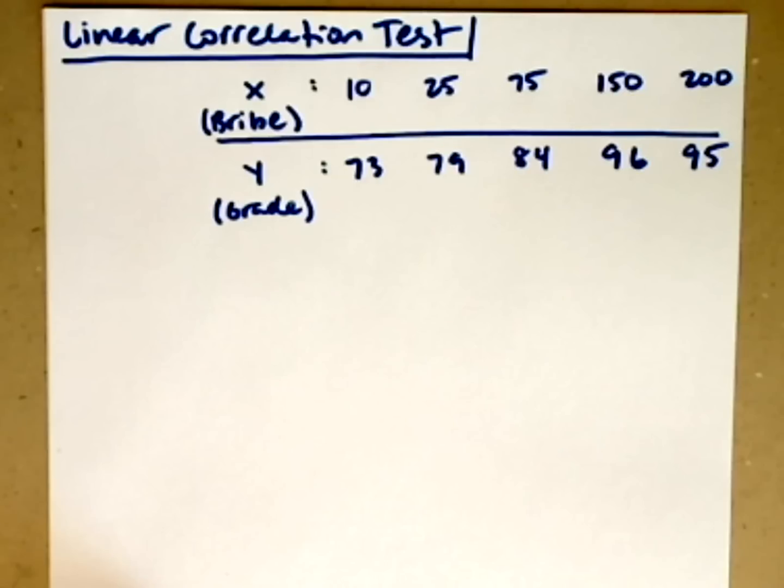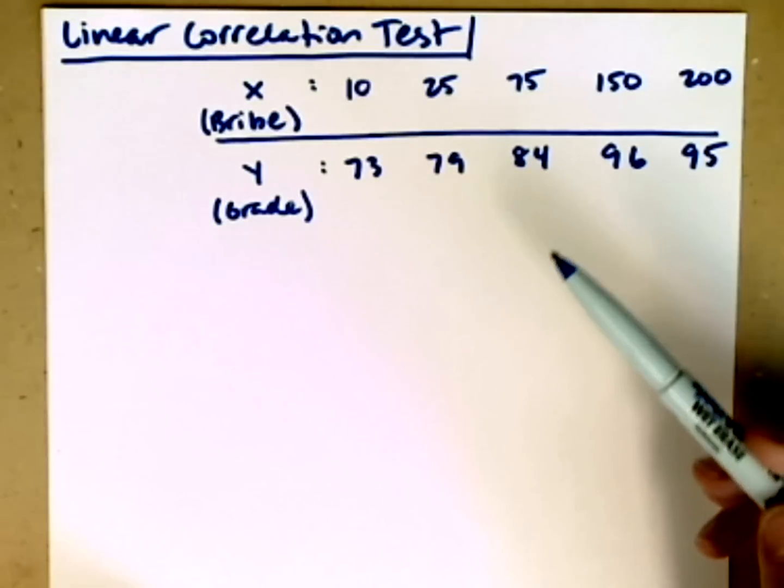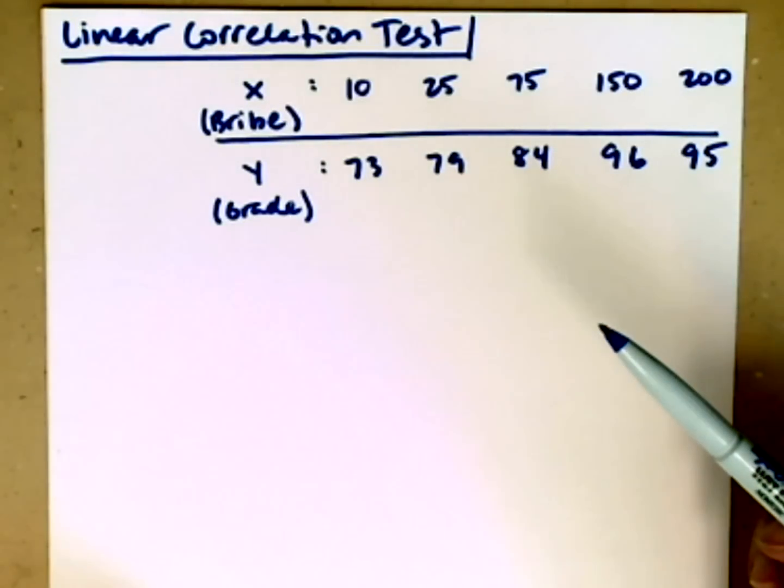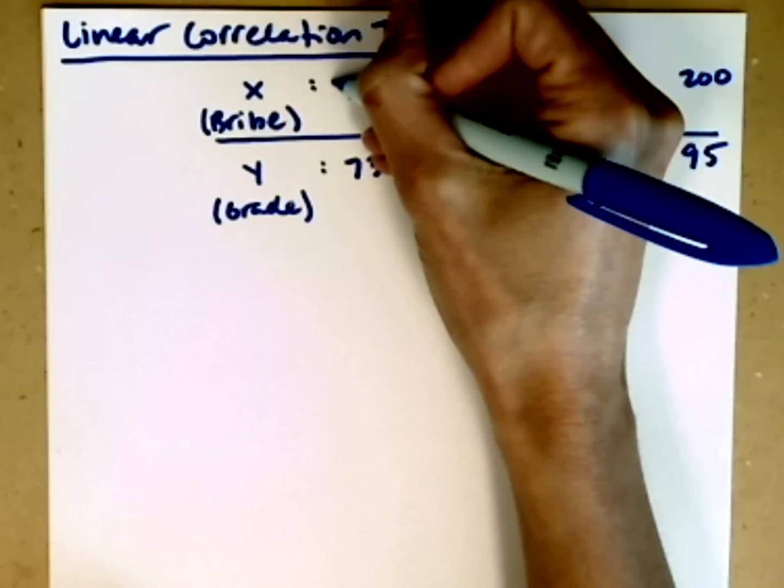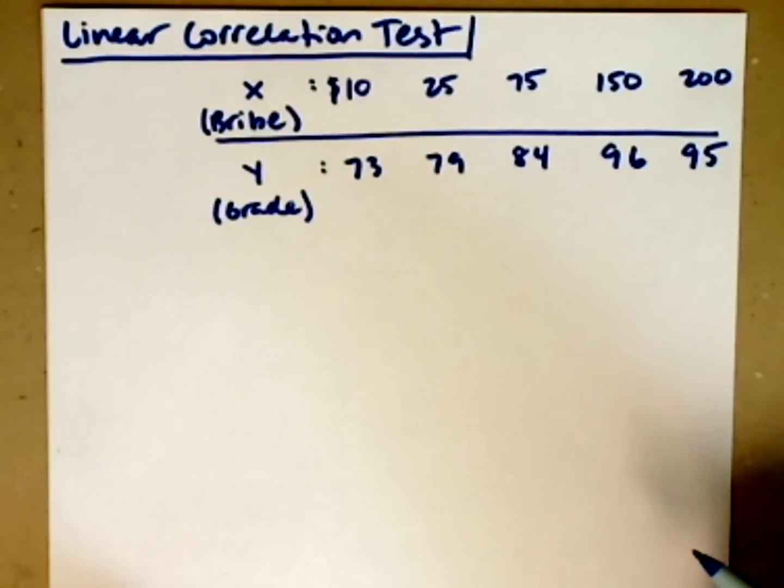Let's do a linear correlation test having the calculator do most of the work for us. In this particular example, I want to see if there's a linear correlation between the amount of a bribe that students give me—$10, $25, $75, $150, up to $200—compared with their grade.